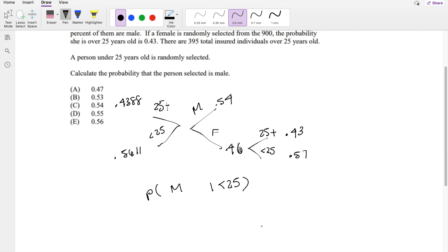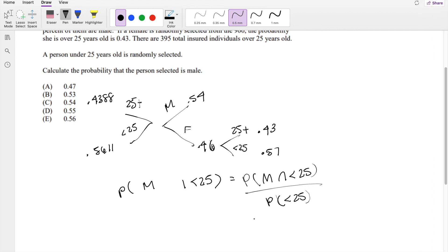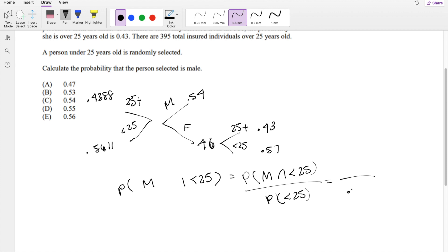So then, as always, the conditional probability is the probability that they're male and less than 25, divided by the probability that they're less than 25. So we know part of the whole population less than 25 makes up 0.5611.